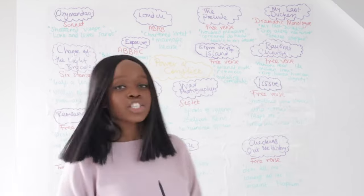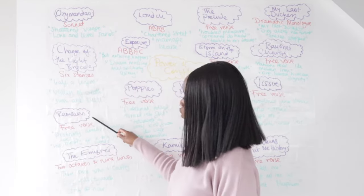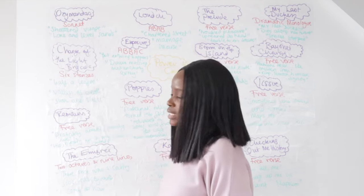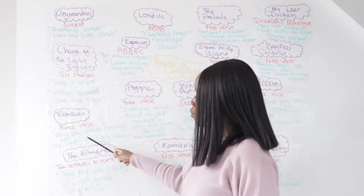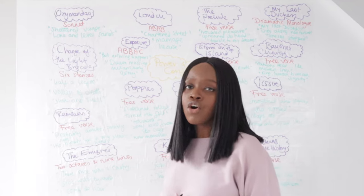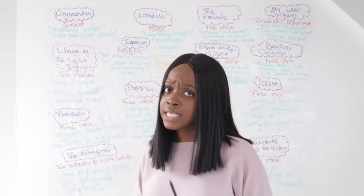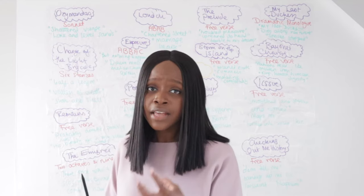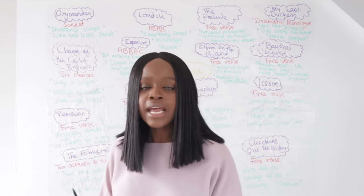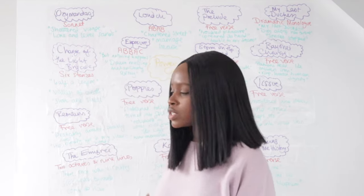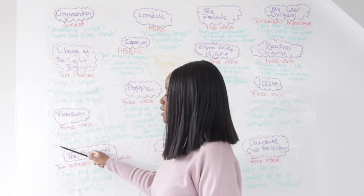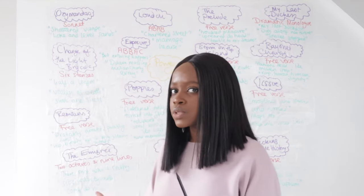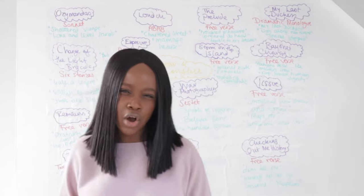The next poem is Remains, written in free verse. The first quotation is 'probably armed, possibly not,' showing that the man killed was actually an innocent civilian. The second quotation, 'his bloody life in my bloody hands,' uses repetition of the word 'bloody' to emphasize just how guilty and haunted the soldier feels after killing an unarmed civilian — he is truly haunted by this act he engaged in with other men.